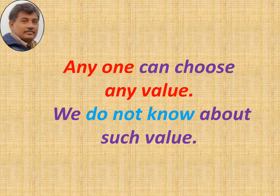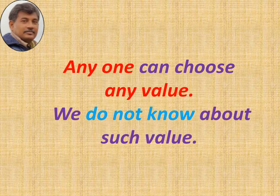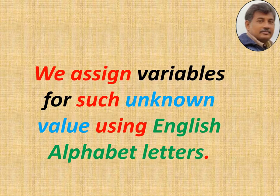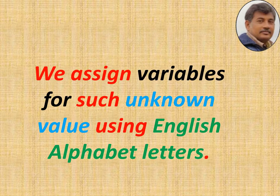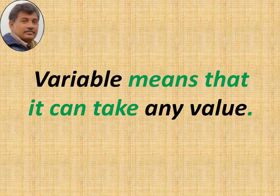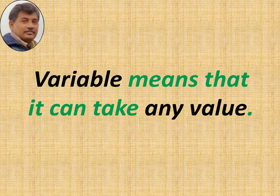When playing this game with friends, we do not know which number each person has chosen. Such an unknown value can be represented using English alphabet letters. These are called variables. Variables are unknown numbers that can take any value.